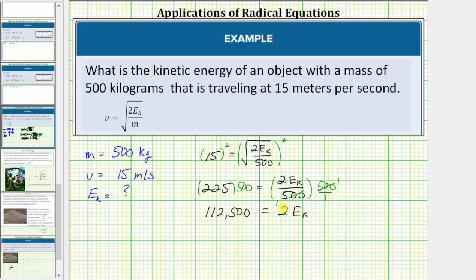And now to solve for E sub k we divide both sides by two. Two divided by two simplifies to one. One times E sub k is E sub k. E sub k is equal to 112,500 divided by two which equals 56,250. And using these units the kinetic energy is in joules.